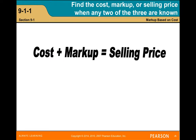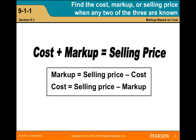Finding the cost, markup, or selling price when any two of the three are known — here you have a basic formula. Cost plus markup equals selling price. The markup equals the selling price minus the cost, and the cost equals the selling price minus the markup.